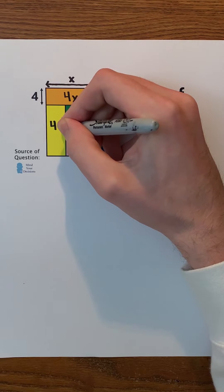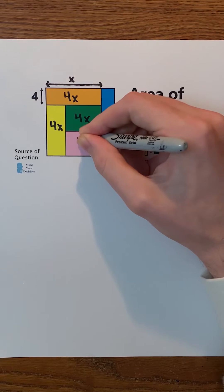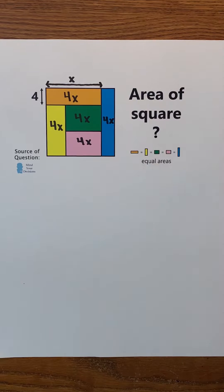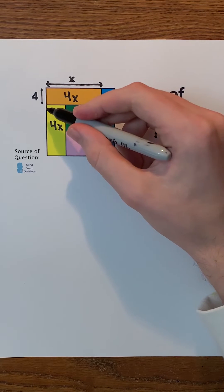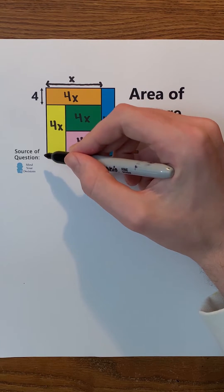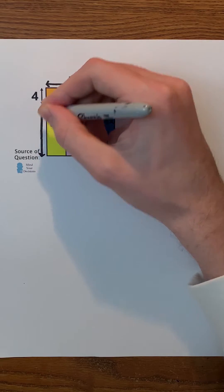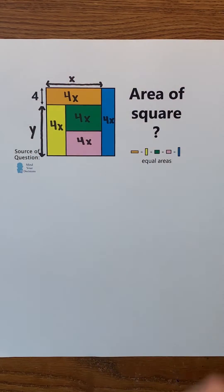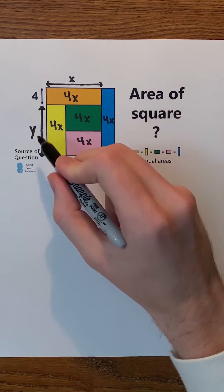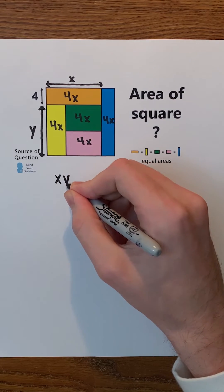Since the areas of the rectangles are equal, each rectangle must have an area of 4x. Let's say that the remaining length on this side of the square, or the length of the yellow rectangle, is y. Therefore, the area of this inner rectangle must be y times x, or x times y.